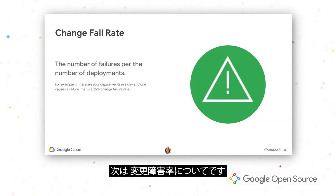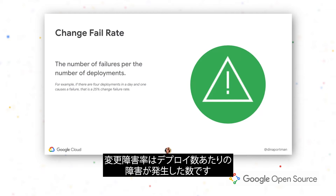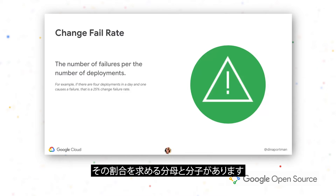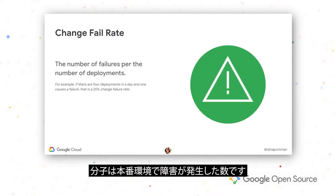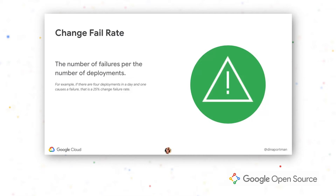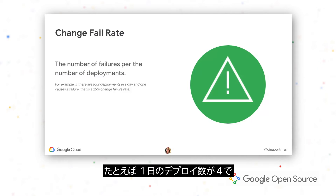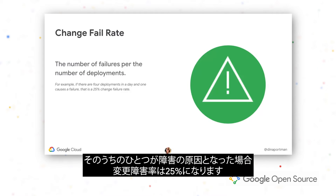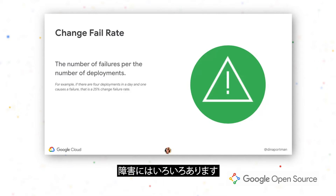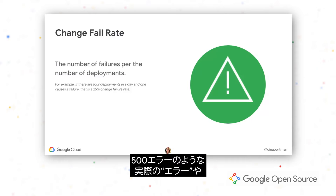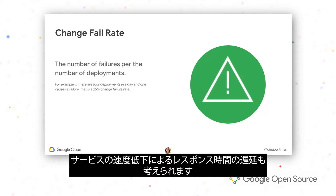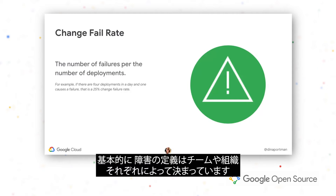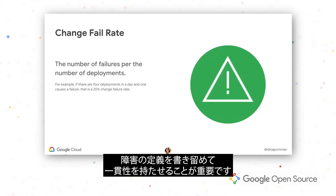The next is change fail rate, which is the number of failures per the number of deployments. Our denominator is the number of deployments to production, and our numerator is the number of failures in production. For example, if you have four deployments in a day and one of them causes a failure, then that would be a 25% change failure rate. A failure can be so many different things — it could be actual 500 errors, but it also could just be your service really slowing down with very slow response times. The definition of failure is really up to each team and organization, but it's really important to write that down and be consistent with it over time.